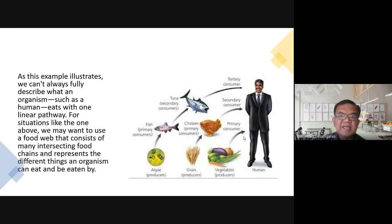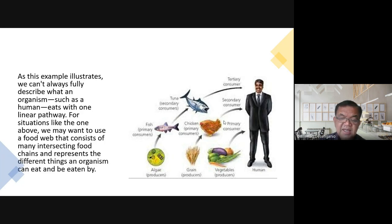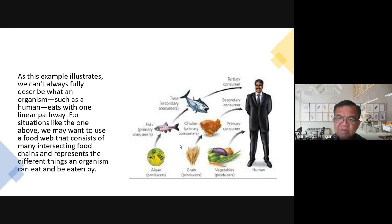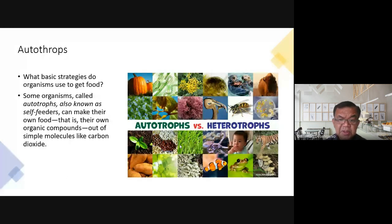As this example illustrates, we can't always fully describe what an organism like a human eats with one linear pathway. The diet of humans is so varied that drawing it out would make it a complex web. For situations like this, we use a food web that consists of many intersecting food chains and represents the different things an organism can eat and be eaten by.